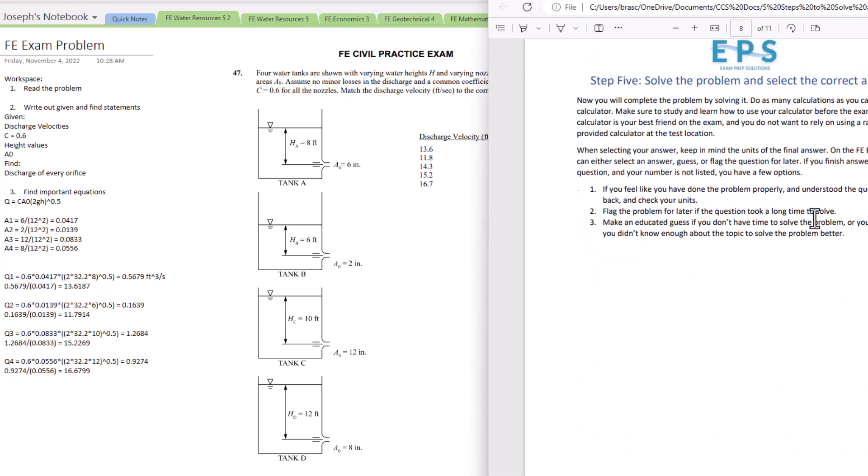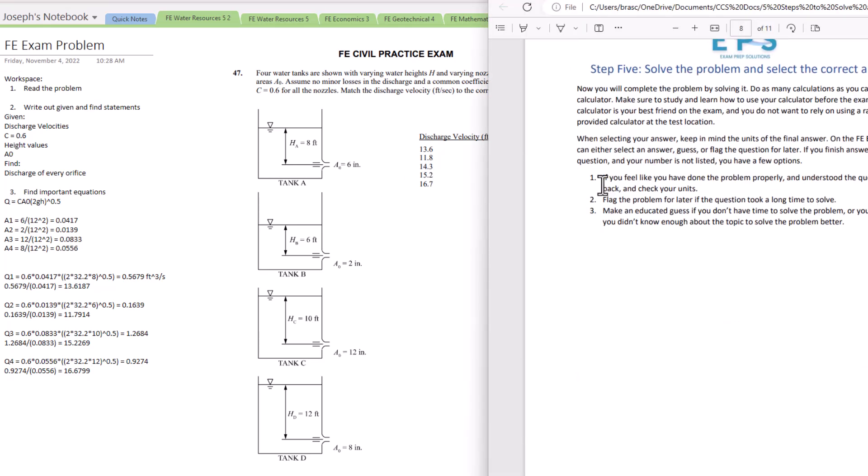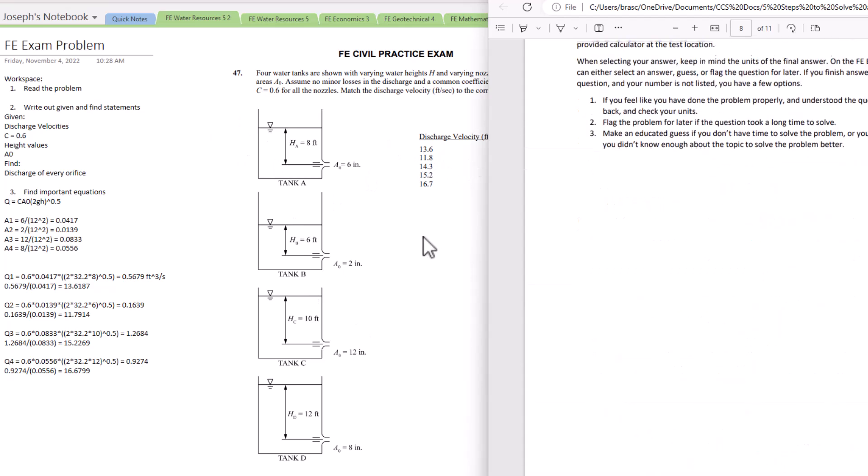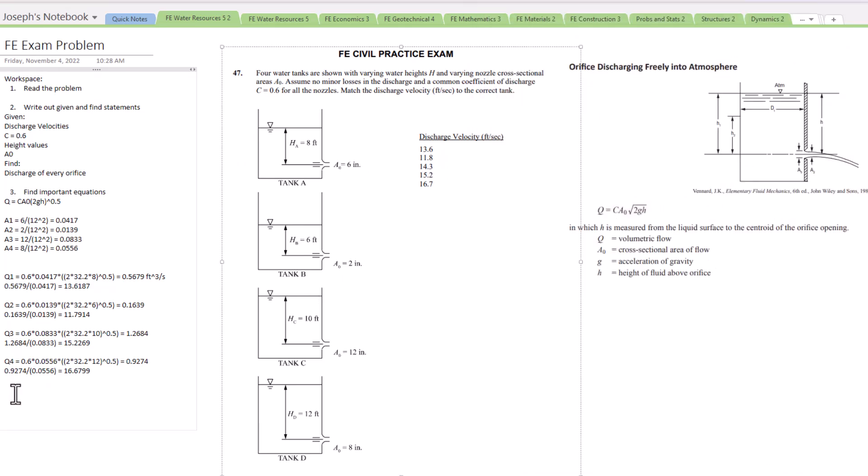If we look at the guide here: solve the problem, select the correct answer. If you feel like you've done the problem properly and understood the question, go back and check your units. The units look good here. Flag the problem for later if the question took a long time to solve. If it looked like it was going to take too long you wanted to flag it ahead. We did find it here, we're going to match up those problems there. That is the approach here: the five steps of solving any FE exam problem. Let me know if you have any questions down below in the description and we'll see you guys next time.